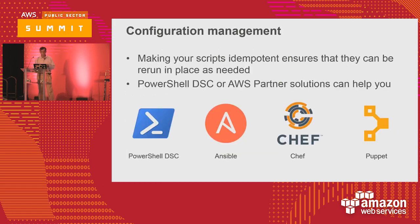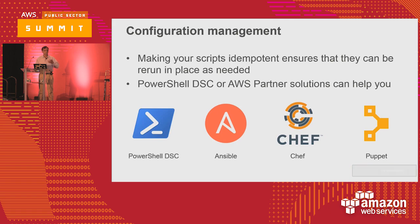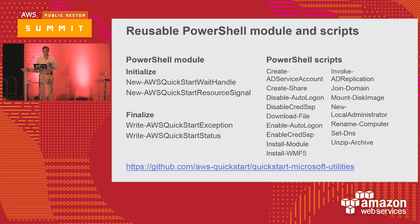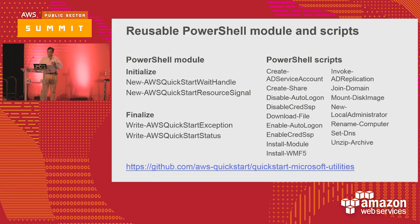These are some of the partner tools you can use: Chef, Puppet, Ansible, and PowerShell DSC — the desired state configuration. It will check for you. We provide some example PowerShell scripts: AD service account creation, create auto logon, disable auto logon, enable auto logon, or invoke domain join. All of these scripts and many more are available when you install any of our toolkit or some of the Quick Starts that we provide.